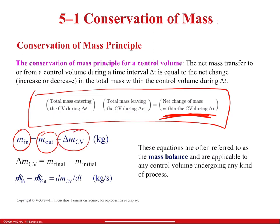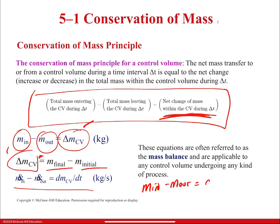The equation can also be expressed as final mass minus initial mass, which tells you exactly what the change is. The rate form — mass in minus mass out — tells you how much mass will change with respect to time, in kilograms per second. These equations are often referred to as the mass balance and are applicable to any control volume undergoing any kind of process.